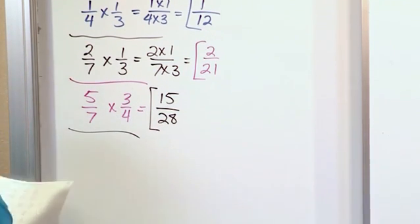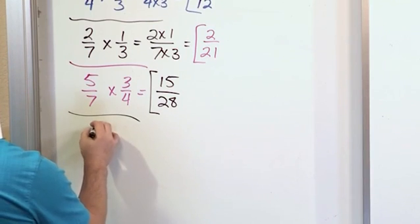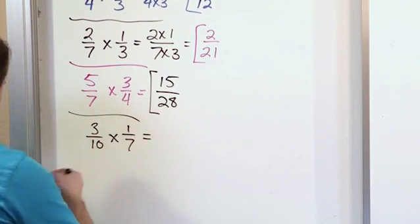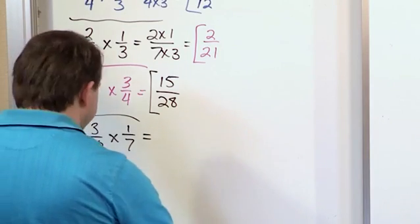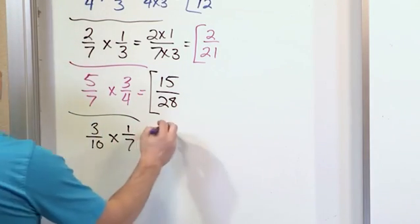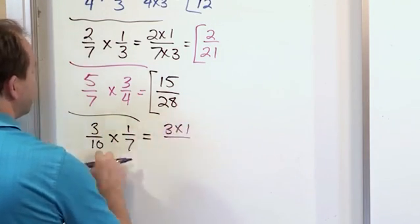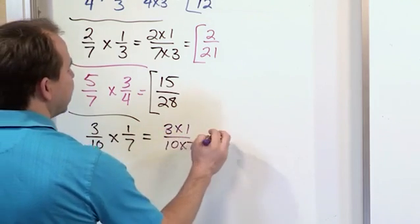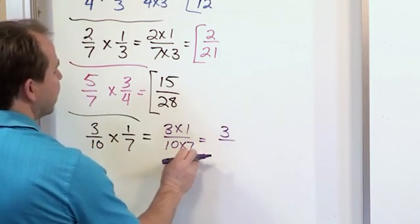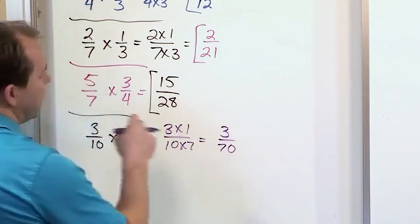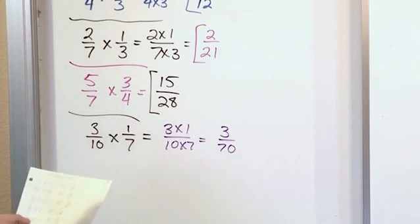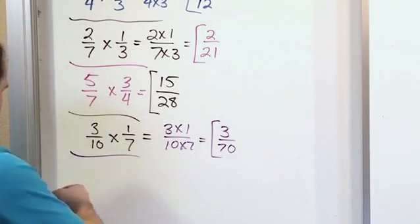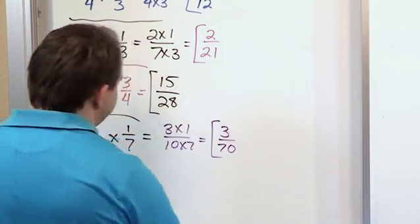And then finally, if I have something like three tenths times one seventh, then I just proceed as usual. I multiply the tops, three times one. I multiply the bottoms, ten times seven. And so on the top, three times one is three. On the bottom, ten times seven is seventy. And I try to divide top and bottom and simplify that and see if I can do that. And I cannot actually simplify that anymore. So I'm done just as it sits.